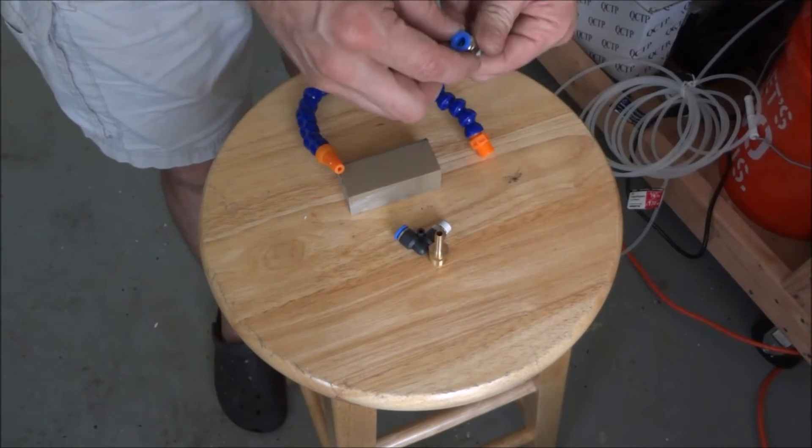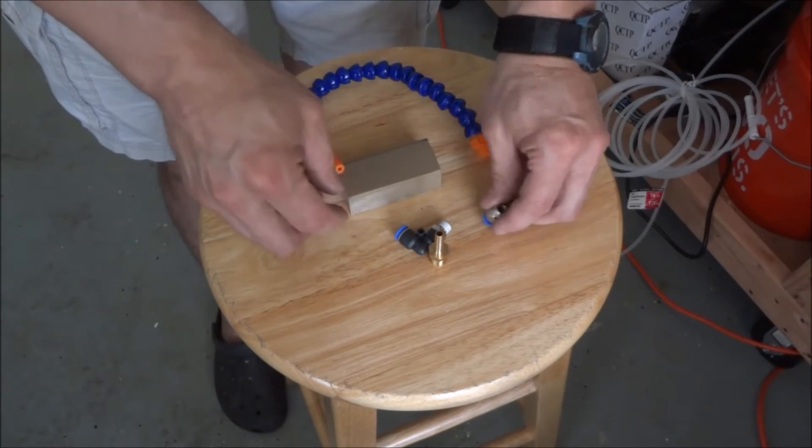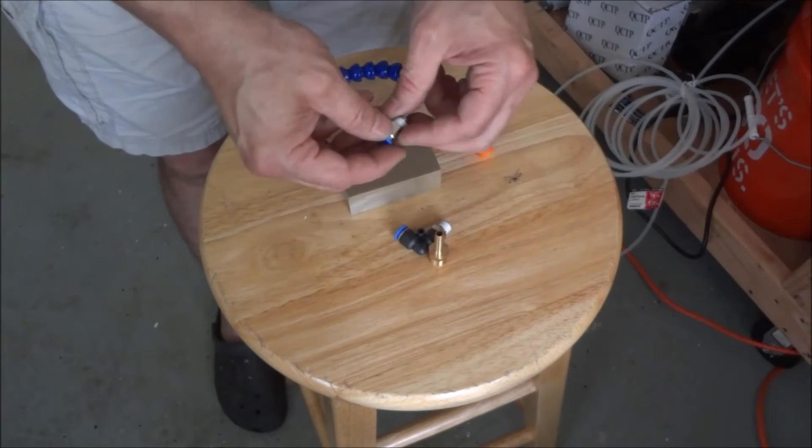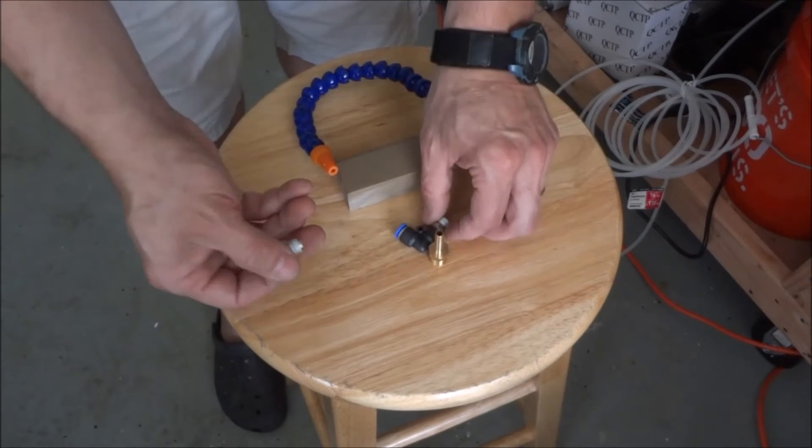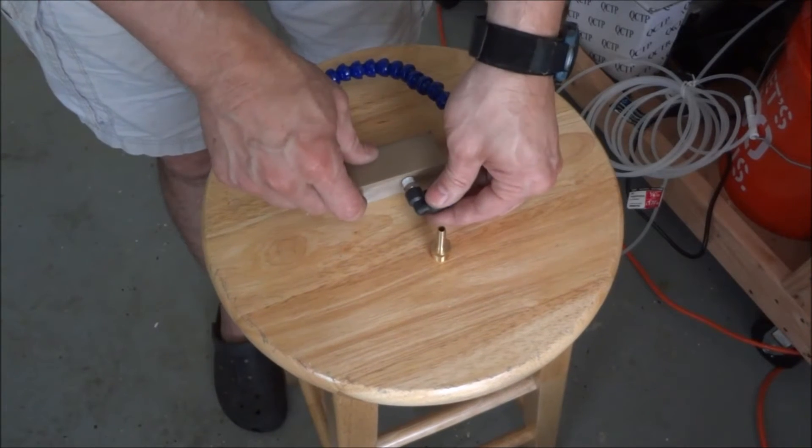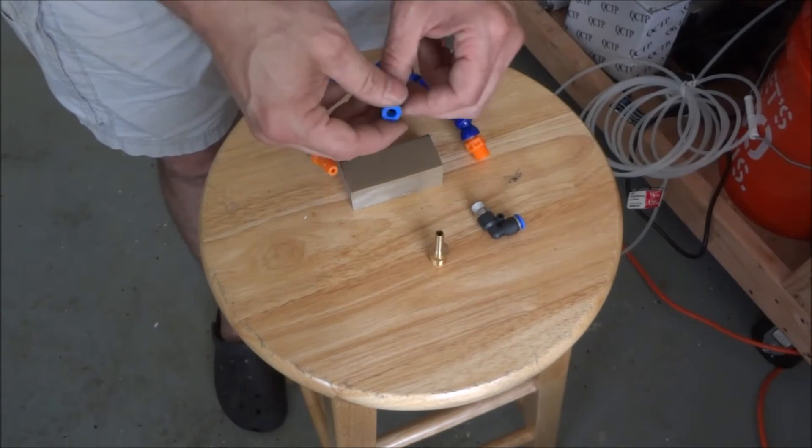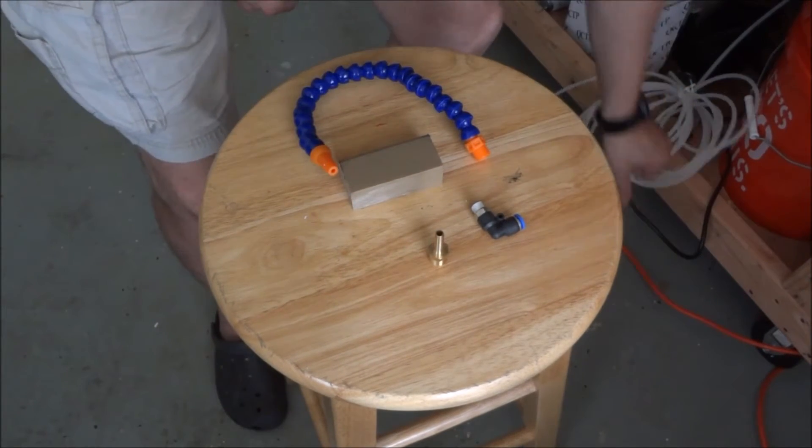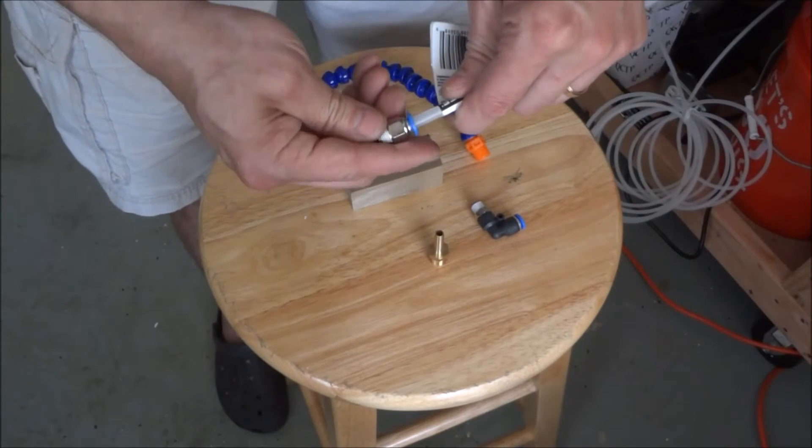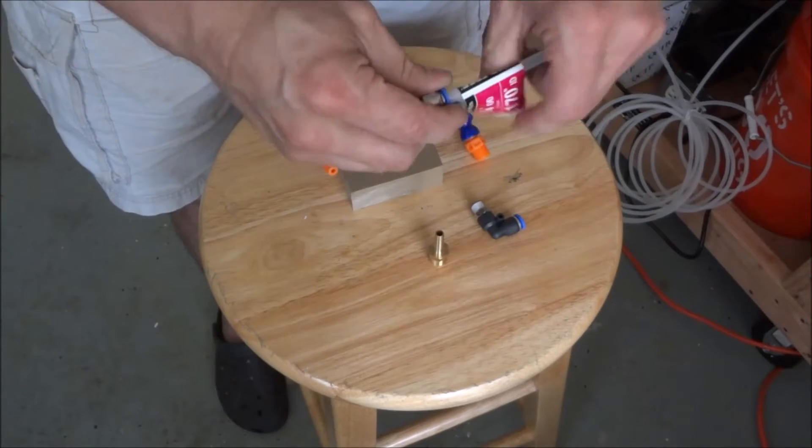Then I'm going to use one of these quick disconnects. You can use a straight one - they make 90 degrees too. For my particular situation I'll probably just use a straight one, and that way I can easily connect it and disconnect it from my hose.